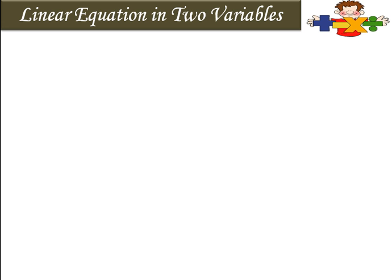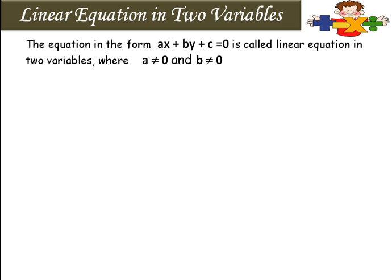Linear equations in two variables: the equation in the form ax plus by plus c is equal to 0 is called a linear equation in two variables, where a is not equal to 0 and b is not equal to 0. Here x and y are variables and their degree is 1 — their power is 1, or index is 1. That is why it is called a linear equation.